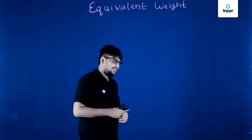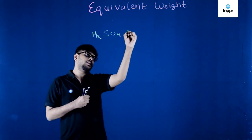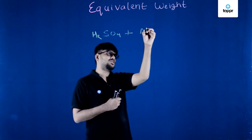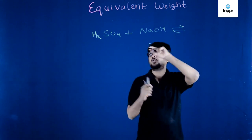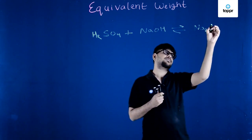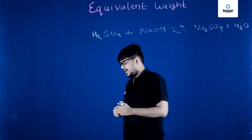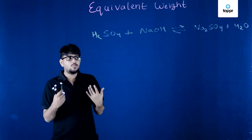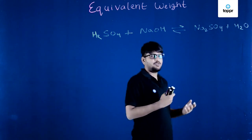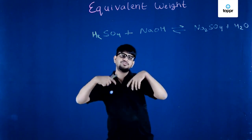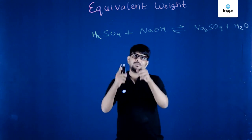Before going there, let me ask you a question. If I give you a reaction — H2SO4 reacting with NaOH — we know that when an acid and a base react, the output is a salt, in this case Na2SO4, plus H2O. Now, how much H2SO4 and NaOH should I take to produce one mole of Na2SO4?